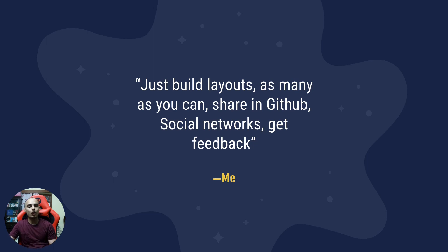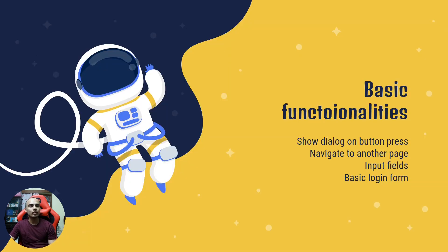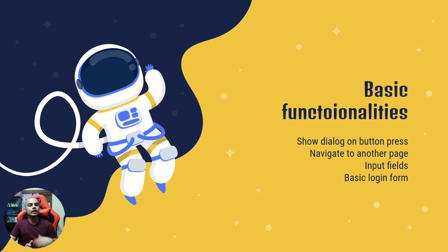Once you start building layouts and sharing, people might start to notice you and may even offer you a project. Then learn the basic functionalities — like pressing a button to show a dialog, navigating to another page, input fields, and user inputs printed to the console. At this phase you'll learn the difference between stateful and stateless widgets. You can build a basic login form that checks credentials against constant values and navigates the user or shows an error dialog.